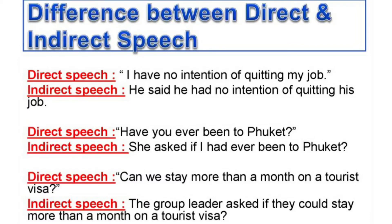Second example — Direct speech: 'Have you ever been to Phuket?' Someone is directly asking that person. Indirect speech: 'She asked if I had ever been to Phuket.' Now someone else is relaying the question. Third example — Direct speech: 'Can we stay more than a month on a tourist visa?' Indirect speech: 'The group leader asked if they would stay more than a month on a visit visa.' Here someone else is asking, so this is indirect speech.